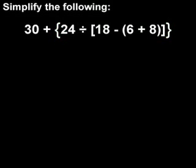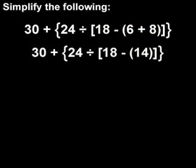We use these different types of grouping symbols to avoid confusion. So to help with this problem, we begin by simplifying within the innermost set of parentheses, then move outward. So we have 6 plus 8, which is 14, and we rewrite the problem.